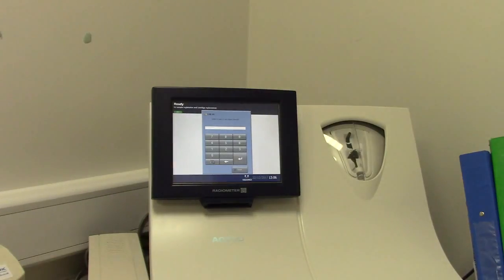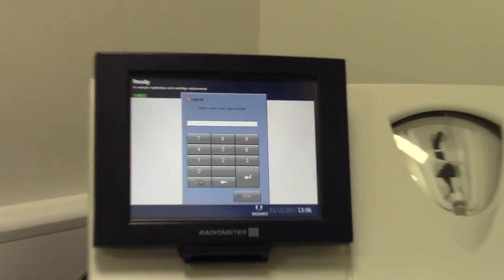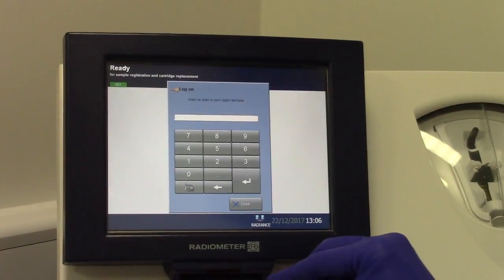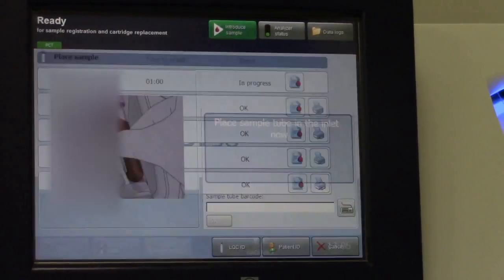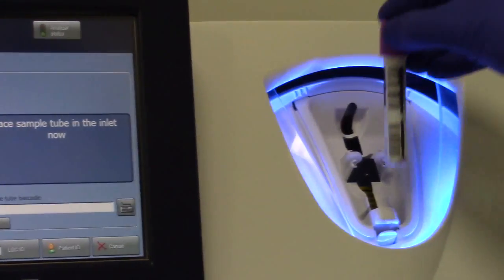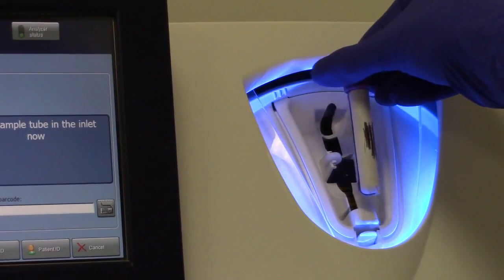Log into the analyzer using your staff ID barcode. Press Introduce Sample on the screen. Place the patient ID barcode so it faces towards the inside of the machine.